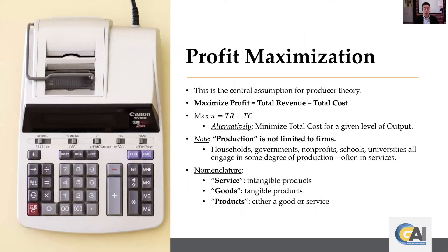Profit maximization is a central assumption for producer theory. A firm is attempting to profit maximize, and it's comprised of two components: total revenue and total cost. We depict profit with the Greek letter PI, total revenues as TR, and total cost as TC — we'll use those abbreviations throughout today. An alternative way of stating this is that firms are trying to minimize total costs for a given level of quantity or output.